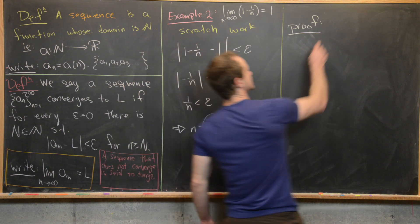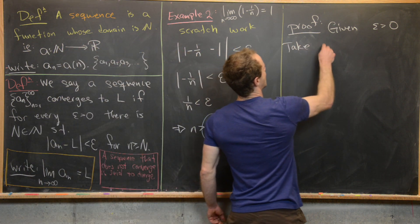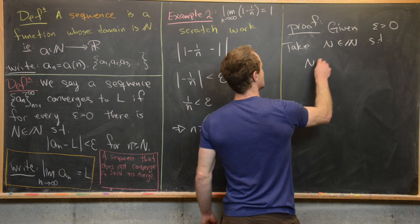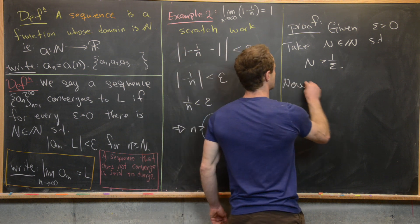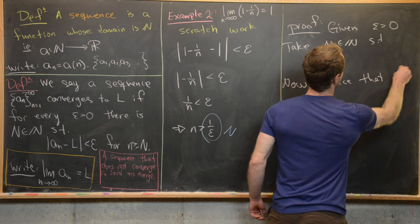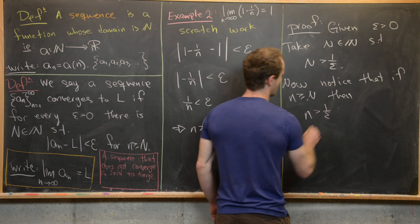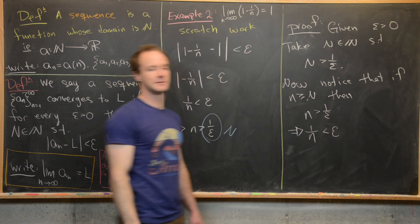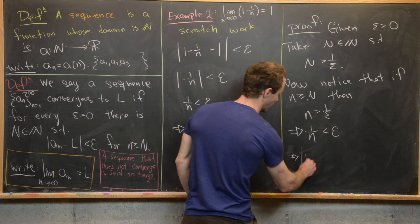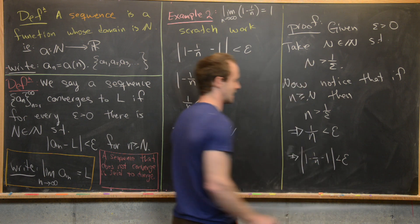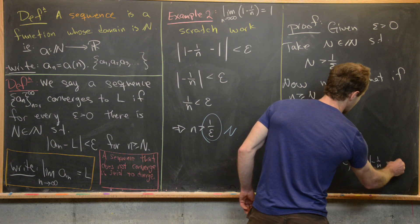For the formal proof: given any epsilon greater than 0, we take N to be a natural number such that N is greater than 1/epsilon, which is again possible by the Archimedean principle. Then if little n is greater than or equal to capital N, little n is greater than 1/epsilon, which tells us 1/n is less than epsilon. We can then jump back directly to conclude that the absolute value of (1 - 1/n) minus 1 is less than epsilon. Therefore, the limit as n goes to infinity of 1 minus 1/n equals 1.